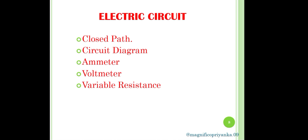Next topic is circuit diagram. It is a diagram which shows how different components of a circuit are connected. An ammeter is the device used to measure the electric current in a circuit. The next device is voltmeter. It is the device used to measure the potential difference in a circuit. Voltmeter is connected across the resistor or a combination of resistors.